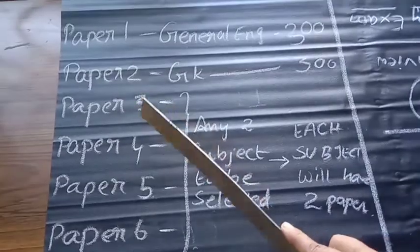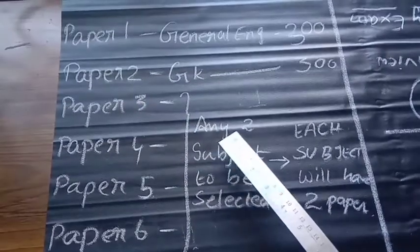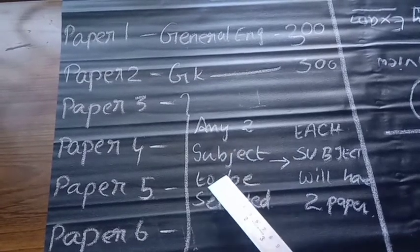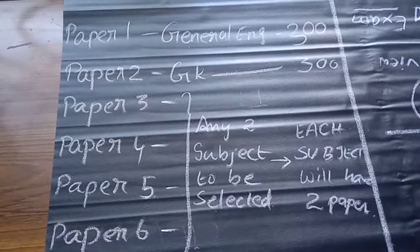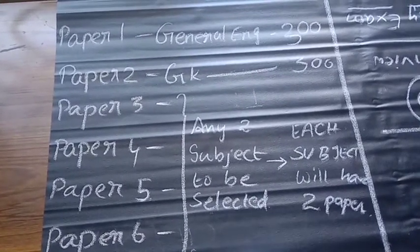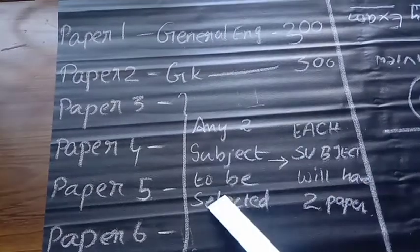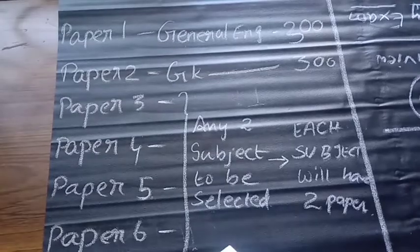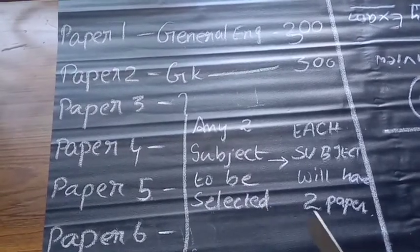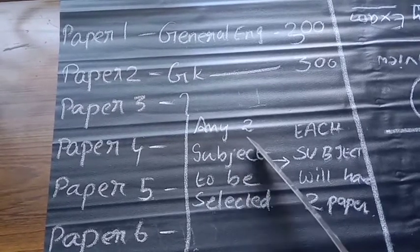Paper number 2 is GK where they will give you GK questions and you need to write them in paragraphs for 300 marks. For papers 3, 4, 5, and 6, you need to select any 2 subjects from the optionals given in the syllabus. There is a list of 10 optional subjects and you need to select any 2 subjects.